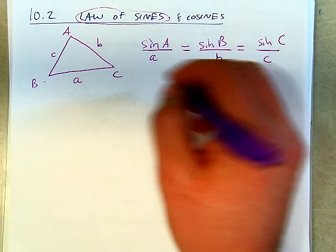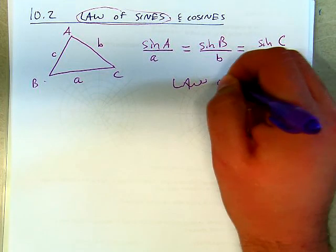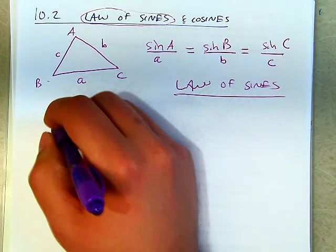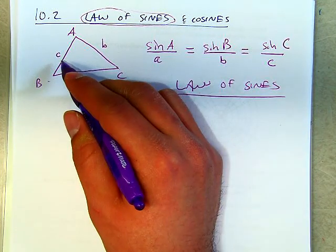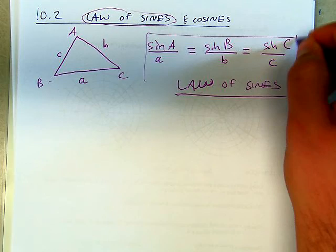Law of cosines, sorry about that, is also related to a non-right triangle. This is the law of sines.